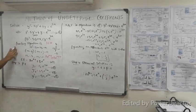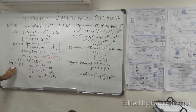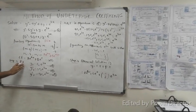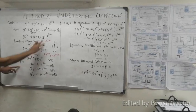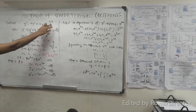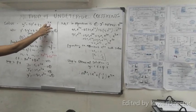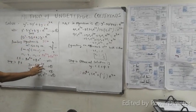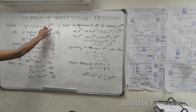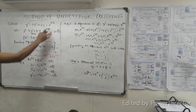Step 2: The complementary function is y_c = A e^(4x) + B e^x. Step 3: For the particular solution, we try y_p = C1 e^(3x).